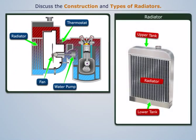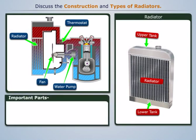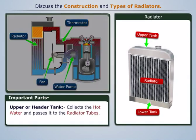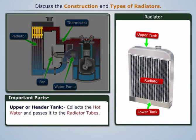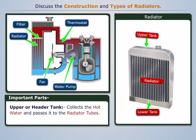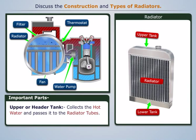Now let's discuss the construction of a radiator. It mainly consists of an upper or header tank, which collects hot water and passes it to the radiator tubes. Filters are attached to this tank for removing the dirt particles from entering into the radiator tubes.